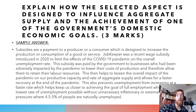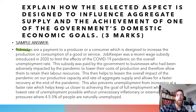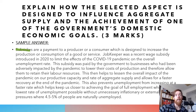I went with subsidies, using JobKeeper as my go-to example for aggregate supply. Subsidies are payments to a producer or consumer designed to increase production or consumption of a good or service. JobKeeper was a recent wage subsidy introduced in 2020 to limit the effects of the COVID-19 pandemic on the unemployment rate and overall level of production. This subsidy was paid to businesses adversely impacted by the pandemic to lower their production costs and allow them to retain their labour, helping lessen the overall impact on productive capacity and the rate of aggregate supply.